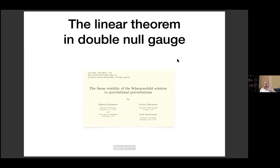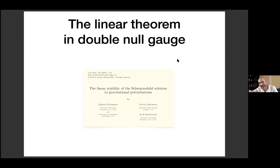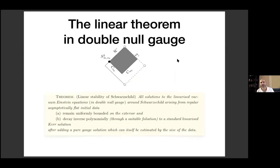The first such linear stability result — joint with Holzegel and Rodnianski, published in 2019 — was shown in something called double null gauge. This is indeed a well-posed reduction of the Einstein vacuum equations, and in fact precisely the reduction that has been used to prove many of the nonlinear results we know and love about the Einstein vacuum. Let me first give you a formulation of the theorem.